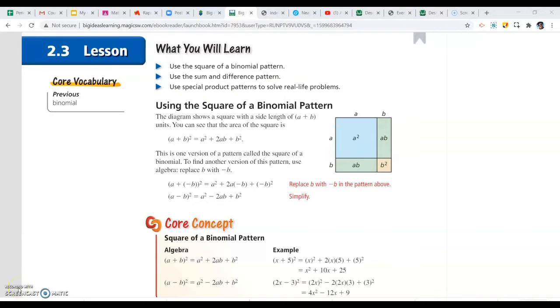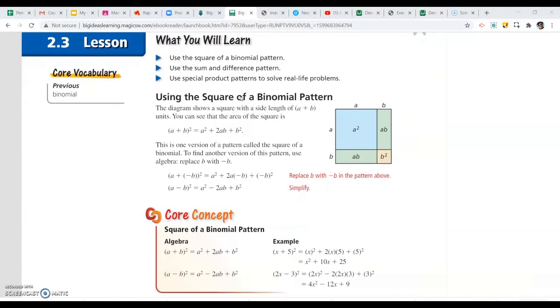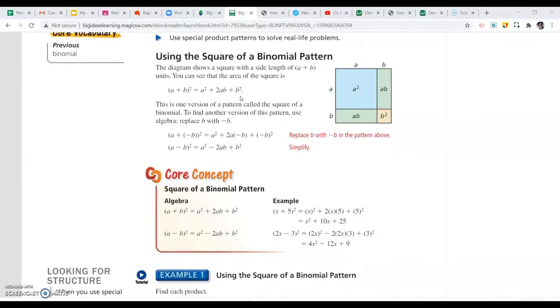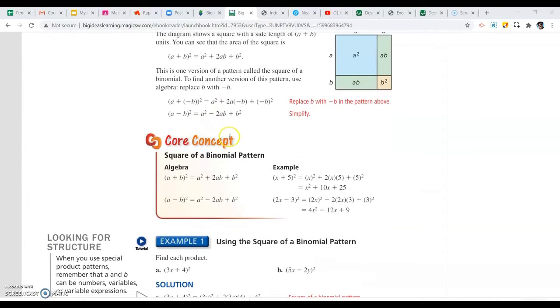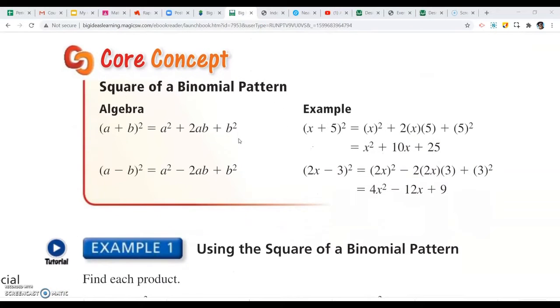All right, students, this video is going to go over section 2.3 for math 2. This is where we'll be squaring a binomial. So we've already multiplied binomials using FOIL. This is essentially just a shortcut, and it can be kind of a confusing shortcut. If you look at the core concept here, it has (a+b) and (a-b). So there's no numbers here except for the exponent.